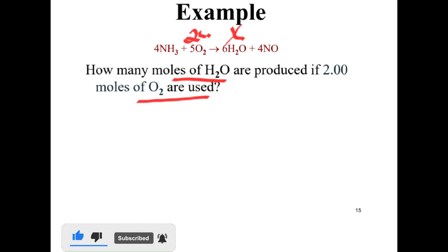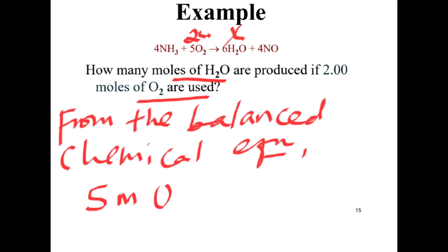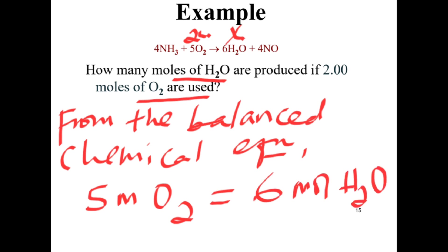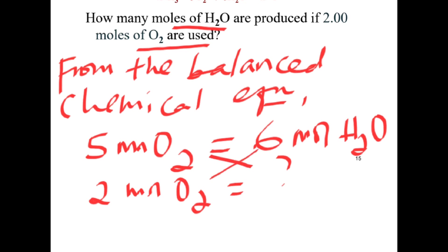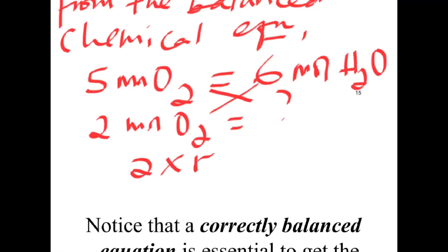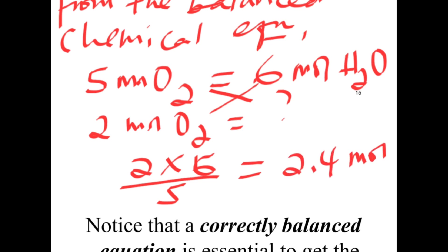From the balanced chemical equation, five moles of oxygen produce six moles of water. If you have two moles of oxygen, the calculation is two times six over five, giving 2.4 moles of water produced from two moles of oxygen.